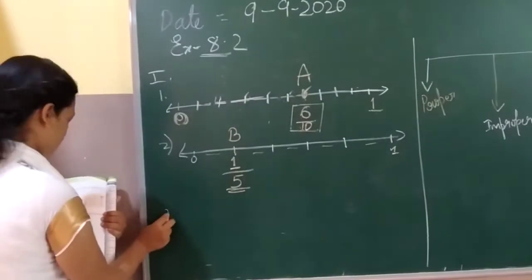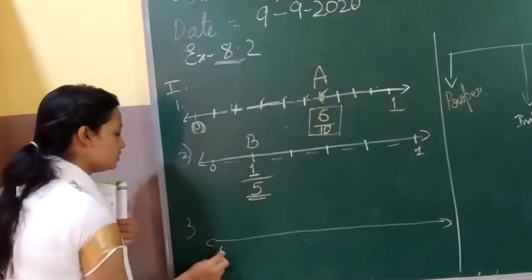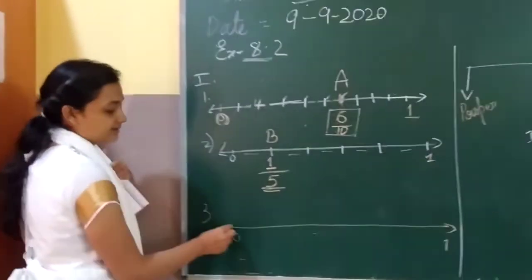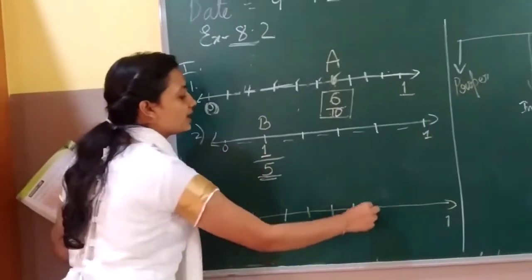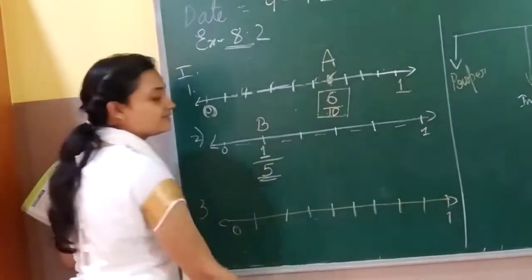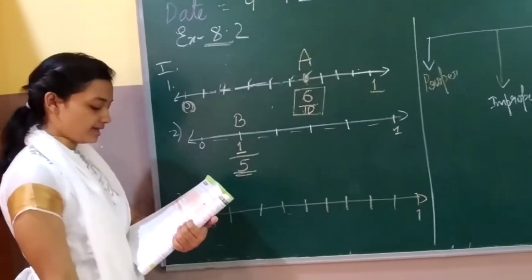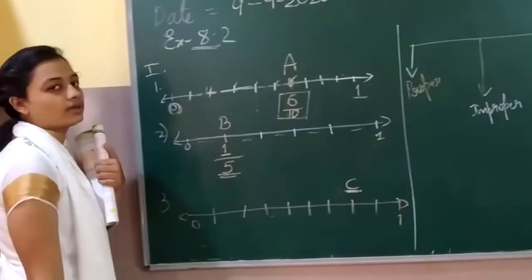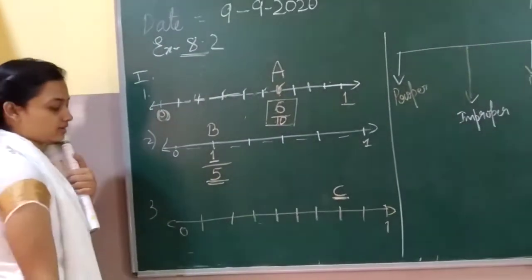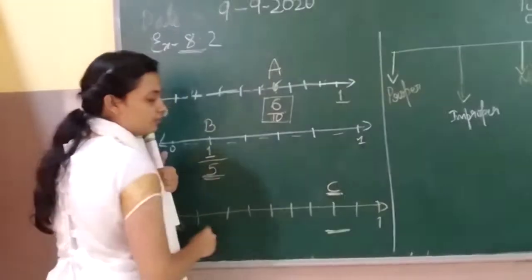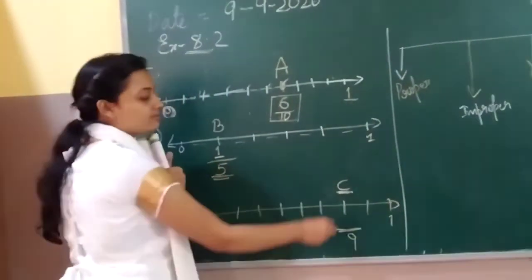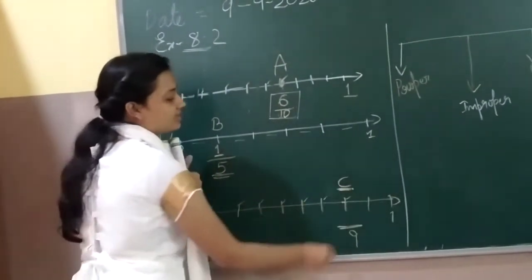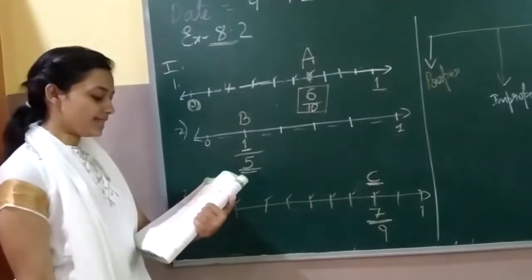Next, the third one. Again it is divided from 0 to 1, and it is divided into 9 parts: 1, 2, 3, 4, 5, 6, 7, 8, 9. They have given the letter P at the second-to-last position. So I have to find which fraction that is. I know the number of parts is 9. Counting the line: 1, 2, 3, 4, 5, 6, 7. So this is my 7 by 9 fraction.